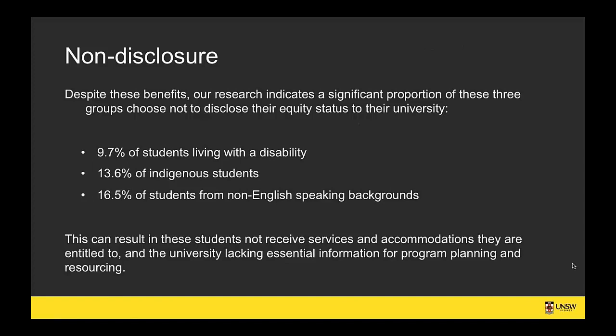Despite the benefits of disclosure, a significant proportion of this population doesn't disclose. Our research has uncovered that about 9.7 or 10% of students living with a disability haven't told their institution, 13.6% of Indigenous students, and 16.5% of students from non-English speaking backgrounds. So this population is largely invisible to the university — processes and intervention programs don't see these students, and we have very little information on their needs.